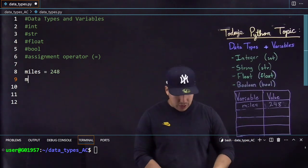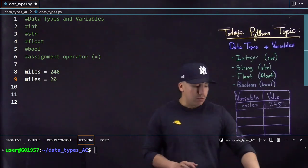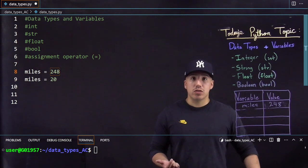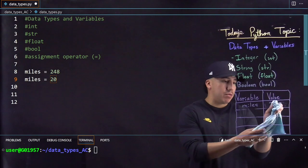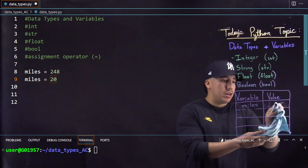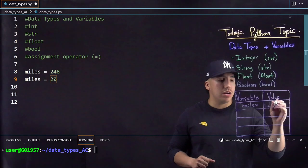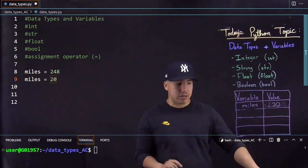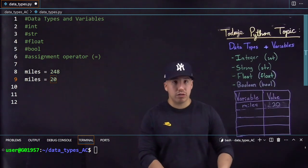Another thing to note is say if you put miles somewhere else in your code, say I wanted to put 20 miles. What this will end up doing is at first it'll be 248 but as soon as this line of code runs it will overwrite what you had before. And now this new value for miles is 20. So that miles equal to 248 doesn't exist anymore. So that's something to keep note of.